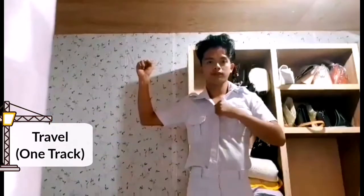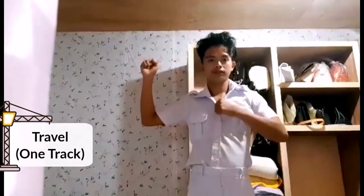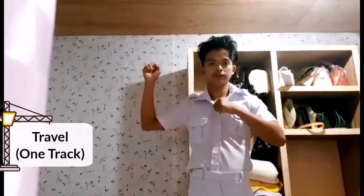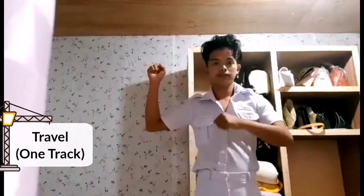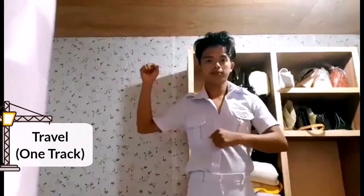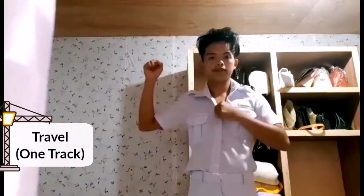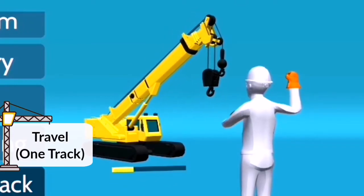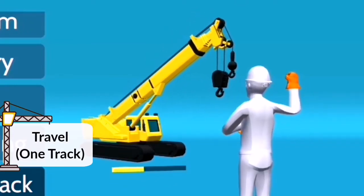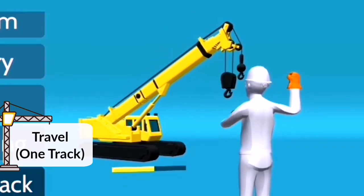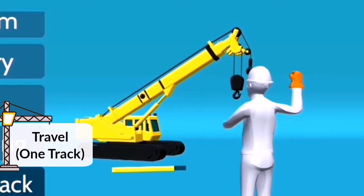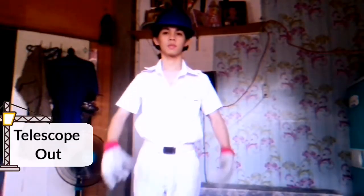Travel one track: indicate the track to be locked by raising the fist on that side, then rotate the other fist in front of the body in the direction that the other track is to travel.